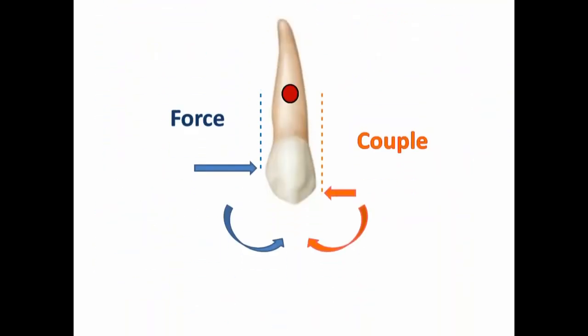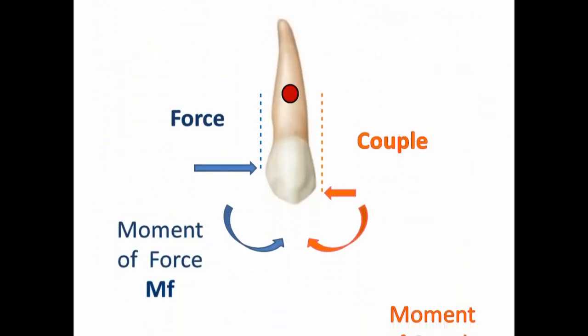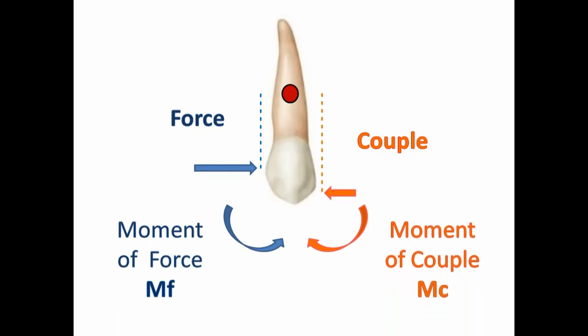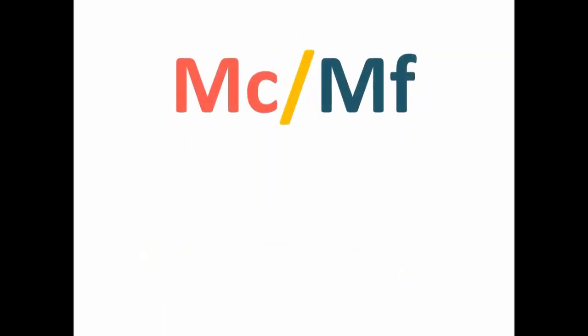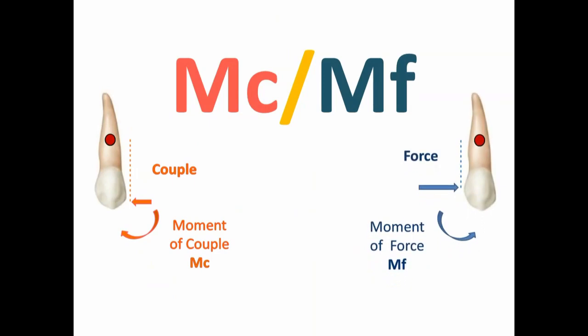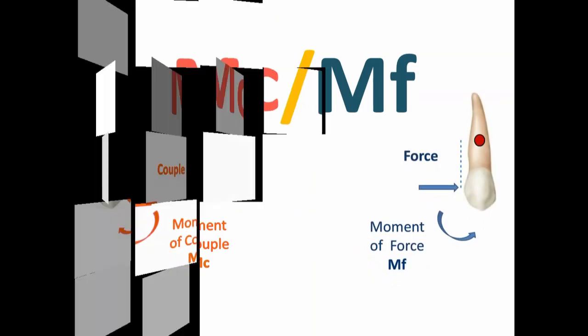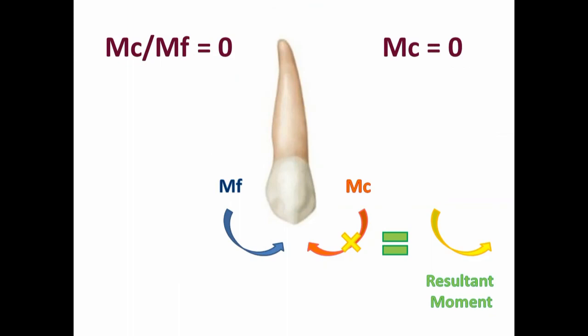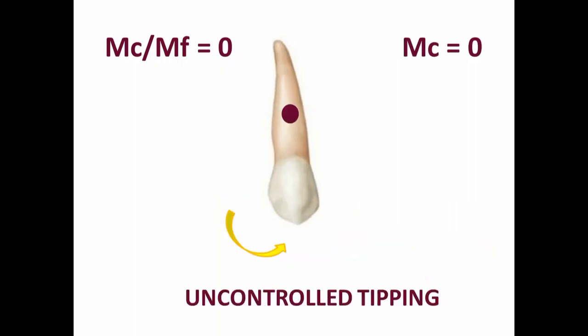The rotational tendency due to force applied is called moment of force, and rotational tendency due to a couple is called moment of couple. It is the ratio of moment of couple to moment of force which determines the rotational movement of the tooth. In the first case, the ratio of moment of couple to moment of force is 0, which means no moment of couple has been applied, so resultant tooth movement due to the applied moment of force is uncontrolled tipping.